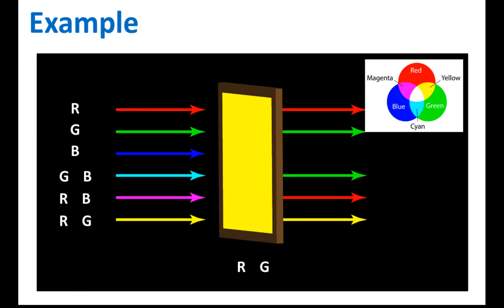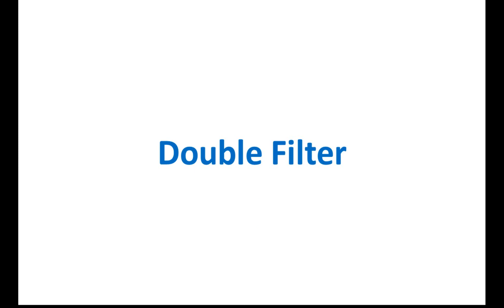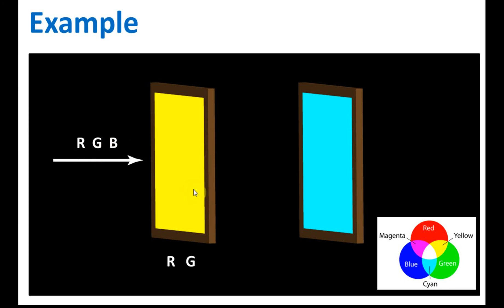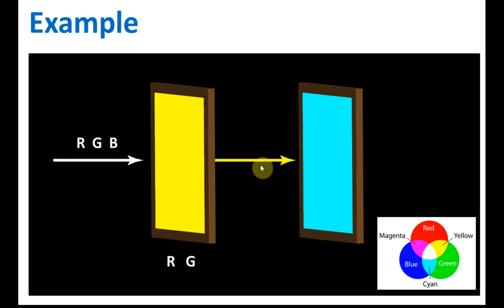Now let's see what happens with a double filter — two filters with different colors. Let's use a yellow filter combined with a cyan filter, and the light moving in is white light. White light is the combination of red, green, and blue. Yellow is the combination of red and green, so the lights allowed to pass through the yellow filter are red and green, which combine together to form yellow light. Blue is blocked.